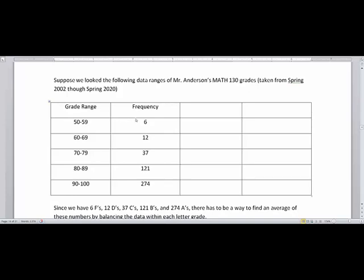This very large set of data has a frequency range, which means that we have 6 people between 50 to 59, 12 people between 60 to 69, 37 people between 70 to 79, 121 people from 80 to 89, and 274 people with 90 to 100 as their ending grade percentage of statistics class.